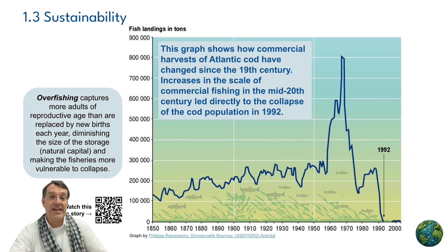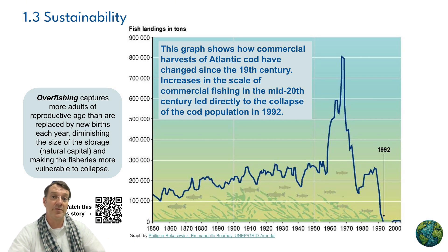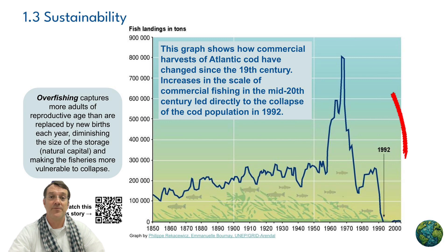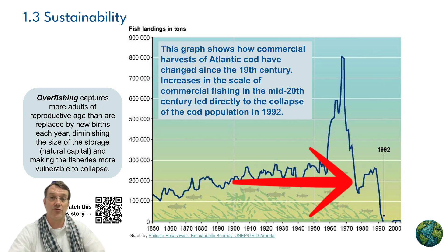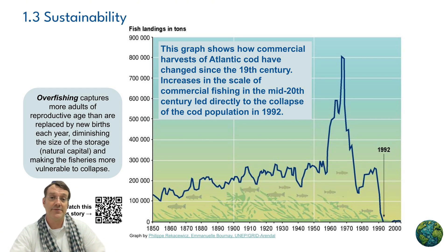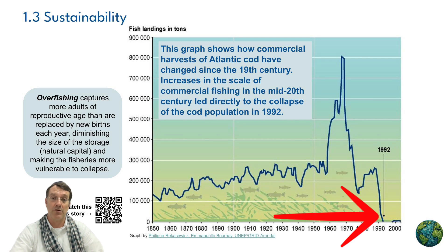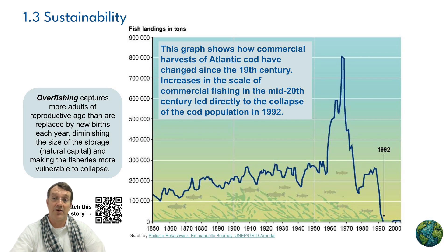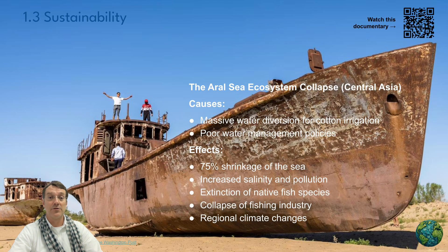Looking at the graph of commercial cod harvesting, the catch was relatively stable — increasing slightly from around 100,000 to 200–250,000 tonnes — until after World War II, when improved technology caused a massive increase. By the early 1980s the catch dropped precipitously as overfishing depleted breeding adults faster than they could be replaced. The stock collapsed in 1992, a moratorium was imposed, and only a very small recovery is visible after 2000.